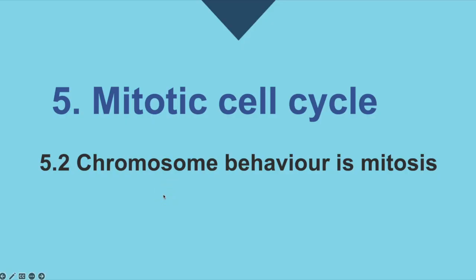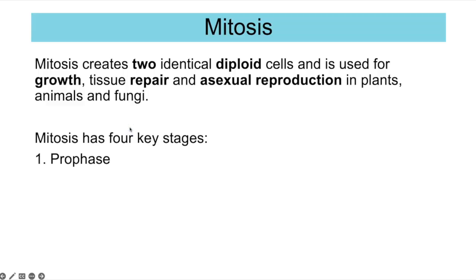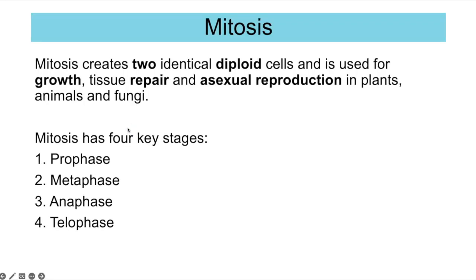The next part of Topic 5 looks at how chromosomes behave in mitosis — in other words, the stages of mitosis. Mitosis is one type of nuclear division in the cell cycle and it creates two identical diploid cells. Diploid means you have two copies of every chromosome. It's used for growth, tissue repair, and asexual reproduction in plants, animals, and fungi. There are four key stages: prophase, metaphase, anaphase, and telophase — often remembered as PMAT.